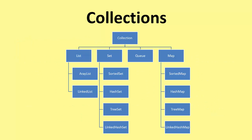Collections are different ways of holding data. There are list collections, set collections, queue collections, and map collections. And each of these is broken down into other types.